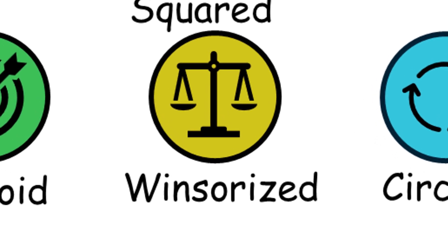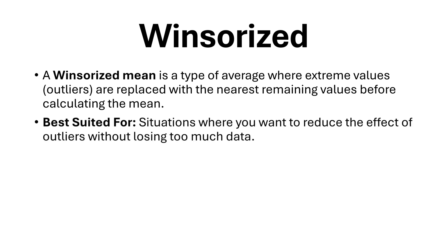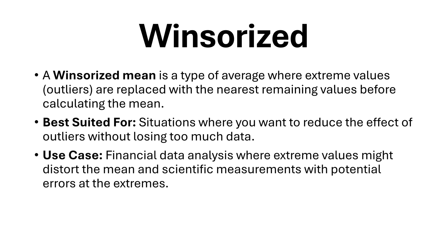Winsorized mean. A Winsorized mean is a type of average where extreme values (outliers) are replaced with the nearest remaining values before calculating the mean. Best suited for situations where you want to reduce the effect of outliers without losing too much data. Use case: financial data analysis where extreme values might distort the mean, and scientific measurements with potential errors at the extremes.